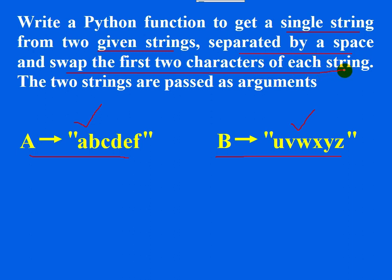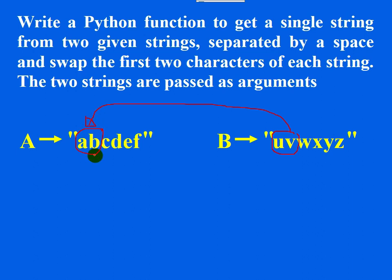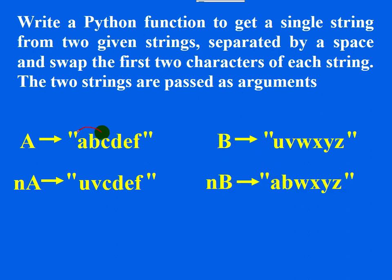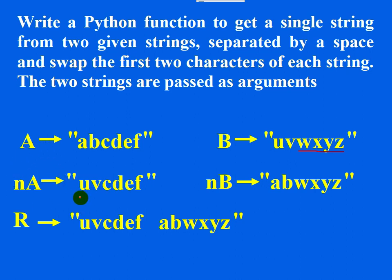And also, swap the first two characters of each string. Which means I need to swap the first two characters of each string. So UV should come here and AB should appear here. Your new A is UV followed by the remaining characters CDEF, and your new B is AB followed by the remaining characters. What about the resultant string?